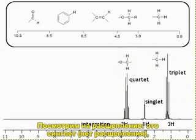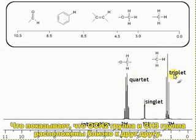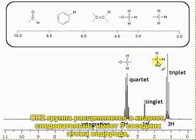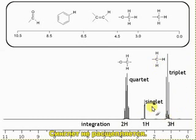If we look at the coupling, one peak is a singlet — so no coupling. There's a quartet and there's a triplet, which shows that the OCH2 group and the CH3 group are next to each other. The CH2 group is split into a quartet by the neighbouring CH3 group, and the CH3 group is split into a triplet by the neighbouring CH2 group, and the singlet doesn't couple.